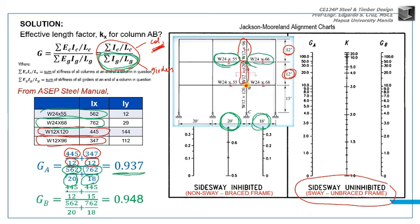When you solve GB, look at joint B. The numerator is the columns connected to B. At B, the columns are W12 by 120, both the same, right? The column above is 445 over 12 feet - 12 feet is the length of the column above. The column below B is 15 feet, so 15 is used here for the second term. The Ix is the same because they have the same section. In the denominator, W24 by 55 on the left, then W24 by 68 on the right with length 18. We arrive at calculating GB to be 0.948.